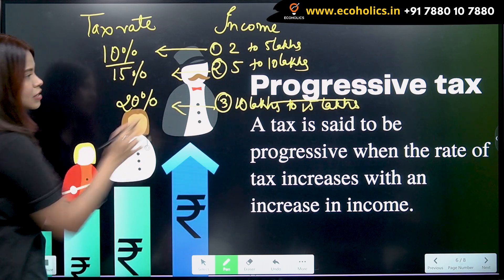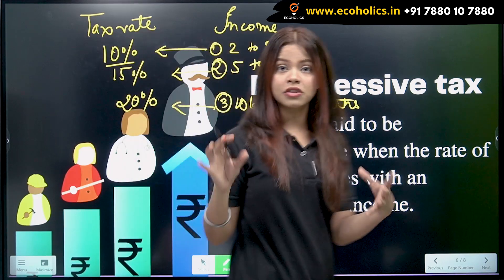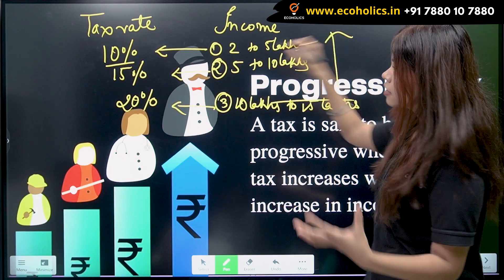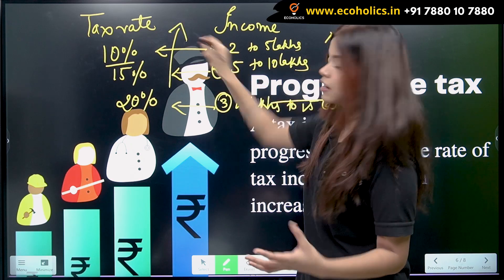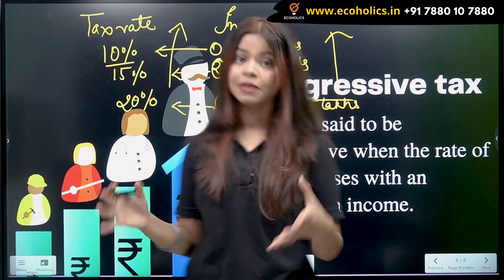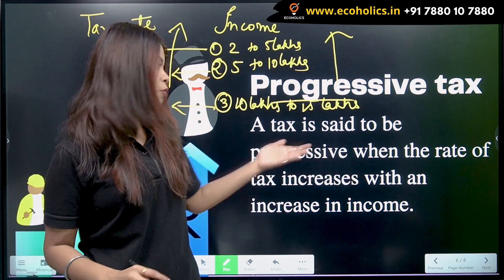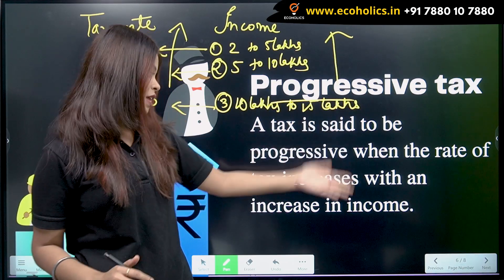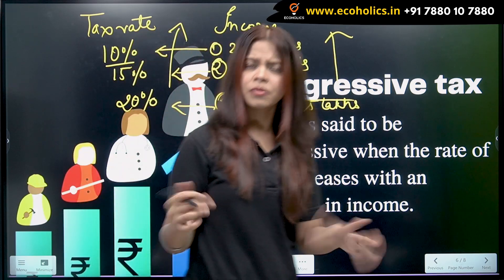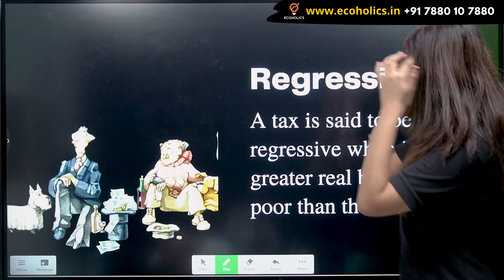Can you see what is happening here? As your income is rising, so is your tax rate. This is what a progressive tax is. A tax is said to be progressive when the rate of tax increases with the increase in income.